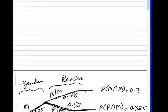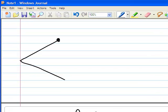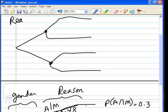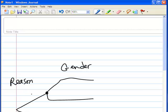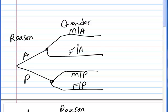At this point, let's take this tree diagram and flip it. Now we're going to start our first set of events to be reason for purchase, and we want our second set of events to be gender. Reason can be appearance and performance, and gender can be male and female. The second set of branches are conditionals — these two are conditional given A, and these two are conditional given P. The end product: these are simple, these are conditional, multiply them and we get joint.